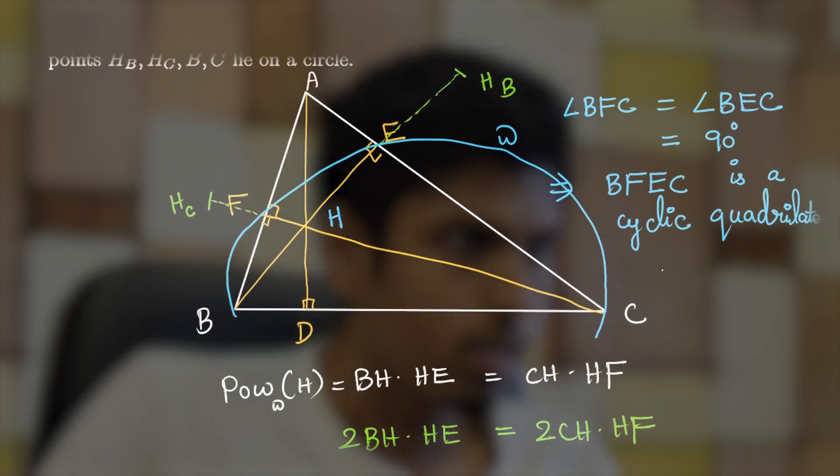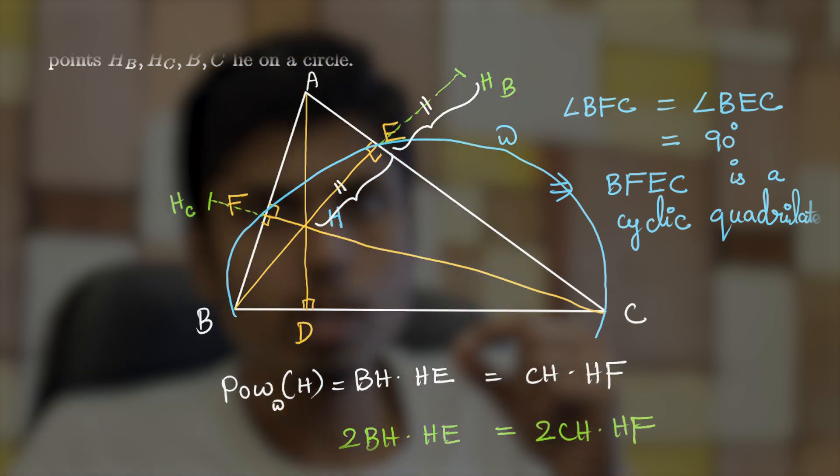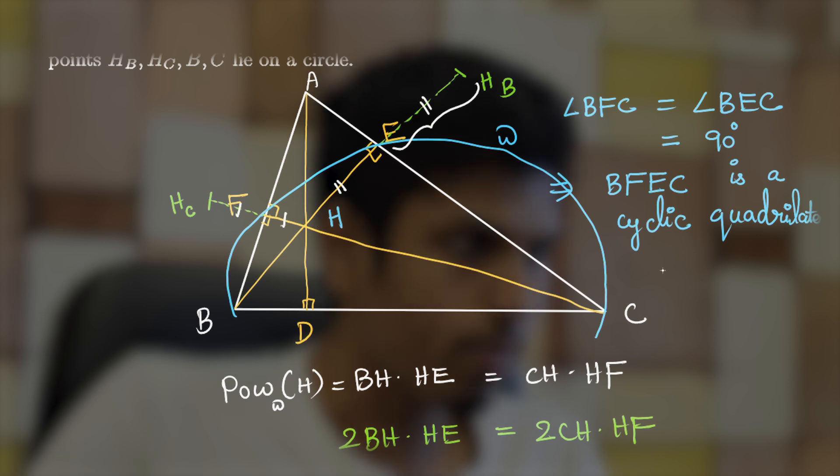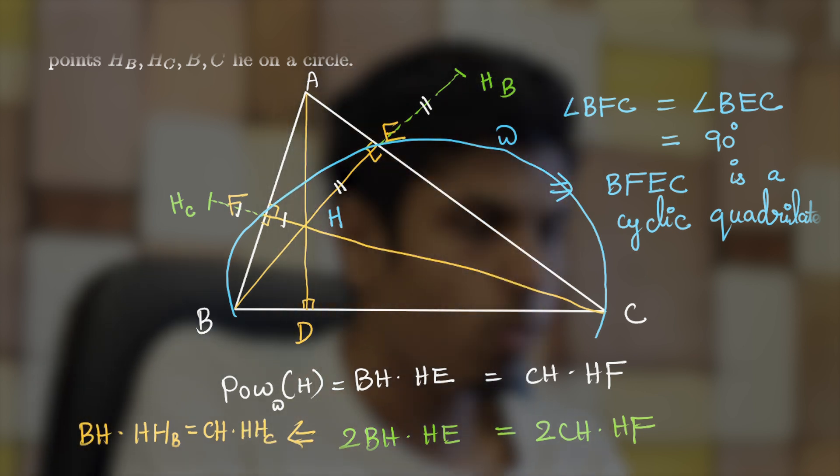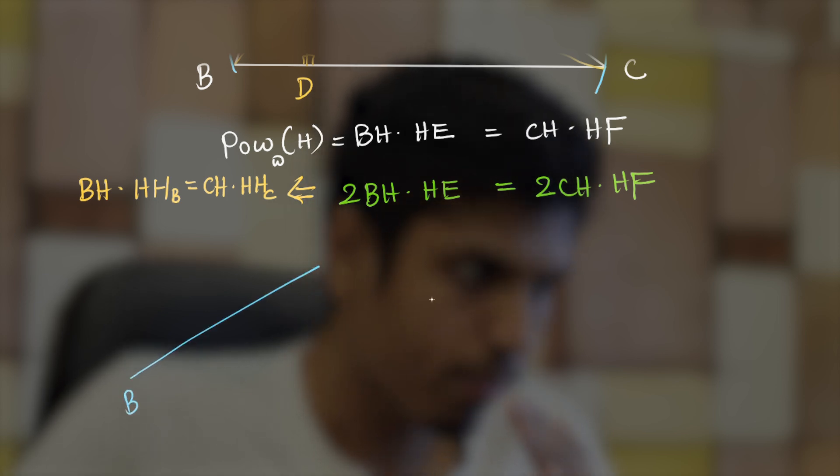But what is two times HE? Think about this. Two times HE would be HE plus HE. But HE is also equal to EH_B. So two times HE is nothing but HH_B, because reflection preserves perpendicular distance to the line about which it was reflected. Thus HF equals - two HF equals HH_C. Due to this property we can rewrite this equation as BH times HH_B equals CH times HH_C. What do we understand from this?